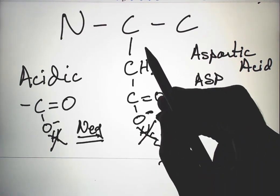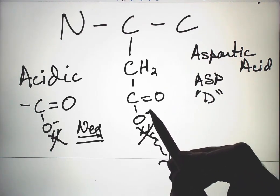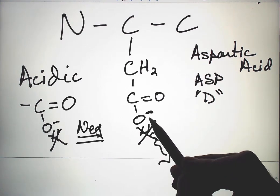As the structure I just showed you, CH2, C double bond O, the hydroxyl group loses the H to become negative.